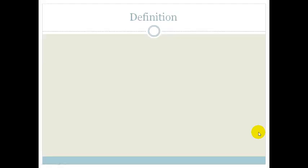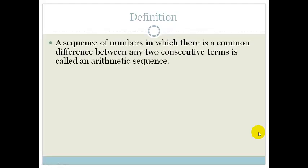First of all, the definition. A sequence of numbers in which there's a common difference between any two consecutive terms is called an arithmetic sequence. Now, that is a very complicated way of saying that if a bunch of numbers in a series goes up by the same amount every time, then we call that an arithmetic sequence.